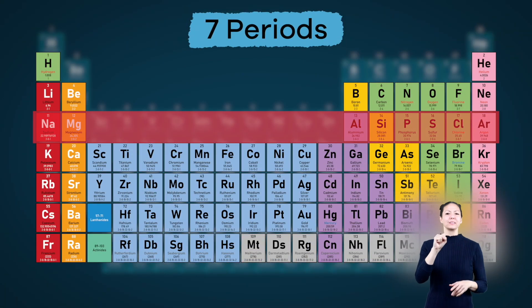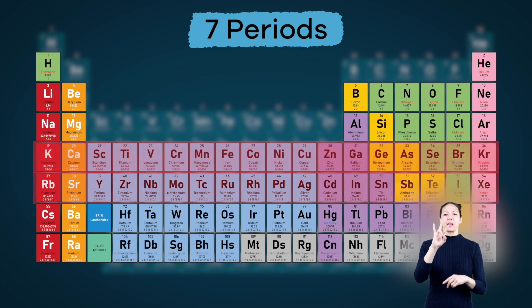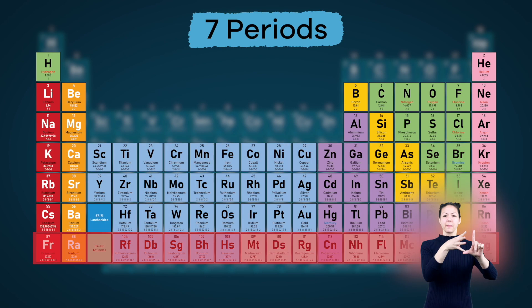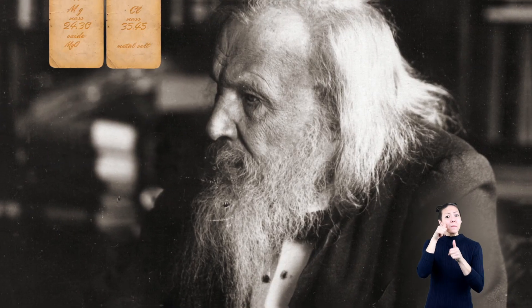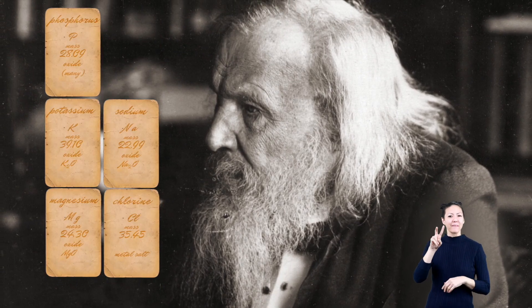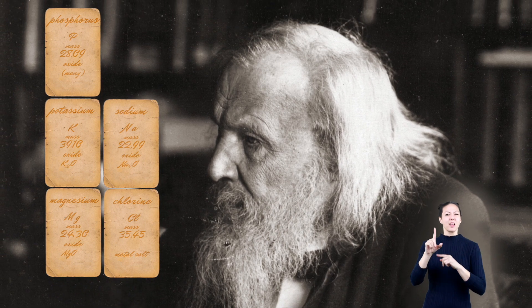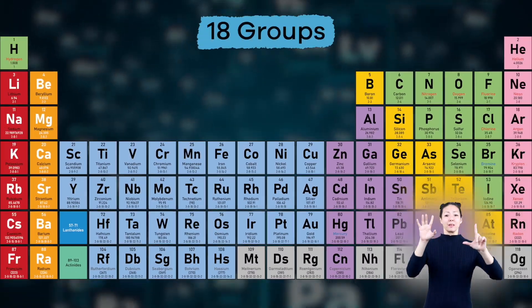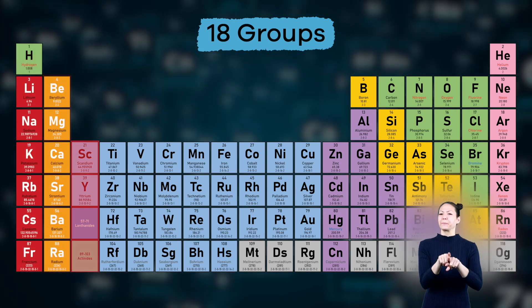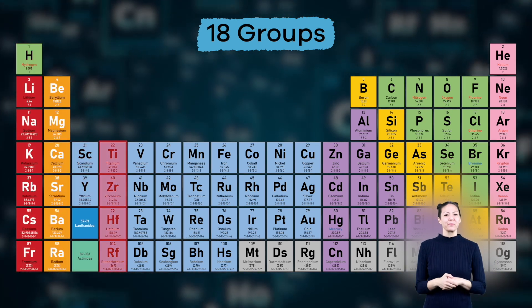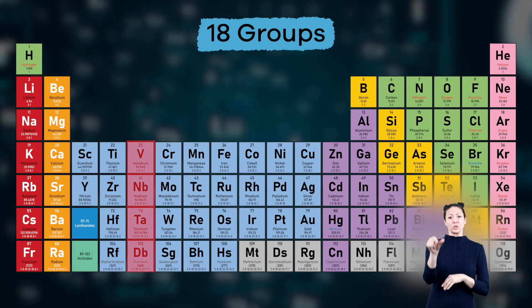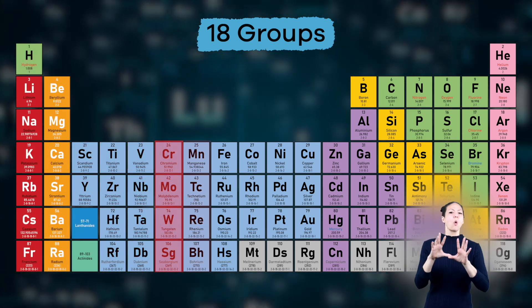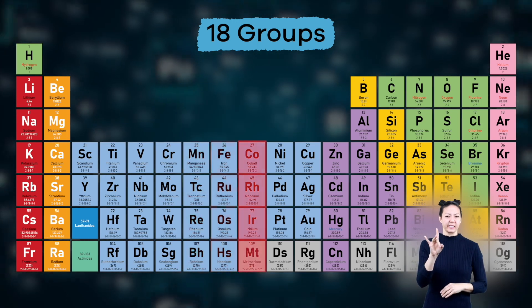These rows are called periods — there are seven total periods in the periodic table. Remember how Mendeleev grouped similar elements in the same column? The periodic table is organized in that same way. These vertical columns are called groups, and there are 18 of them.